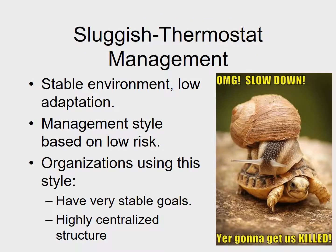Sluggish thermostat management — stable environment, low adaptation — creates a management style based on very low risk. Culturally, management has learned that change is not a good thing and that the organization works as it is. It has spent most of its energy stabilizing all internal systems based on a stable environment, and because of that, management has also become very intolerant of risk. Organizations using this style usually have very stable goals and a highly centralized bureaucratic structure. This isn't bad if the environment suggests it's what's needed, but when this organization suddenly encounters changes in the environment, it is going to be the slowest to adapt.